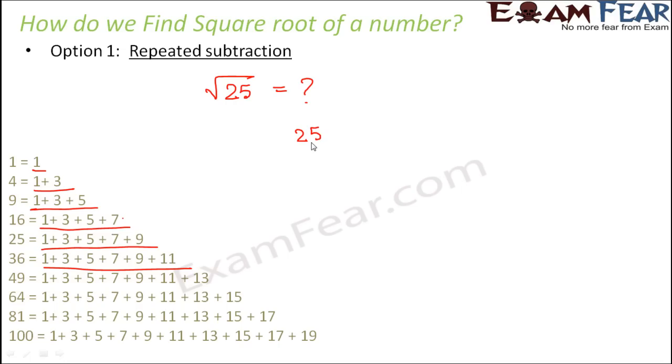So we will do it in steps. In first step we subtract the first odd number from 25, the first odd number is 1. So how much do we get? We get 24. In the second step we further subtract from 24, from the result that we obtained in step 1, we subtract the next odd number which is 3. So 24 minus 3 is 21.